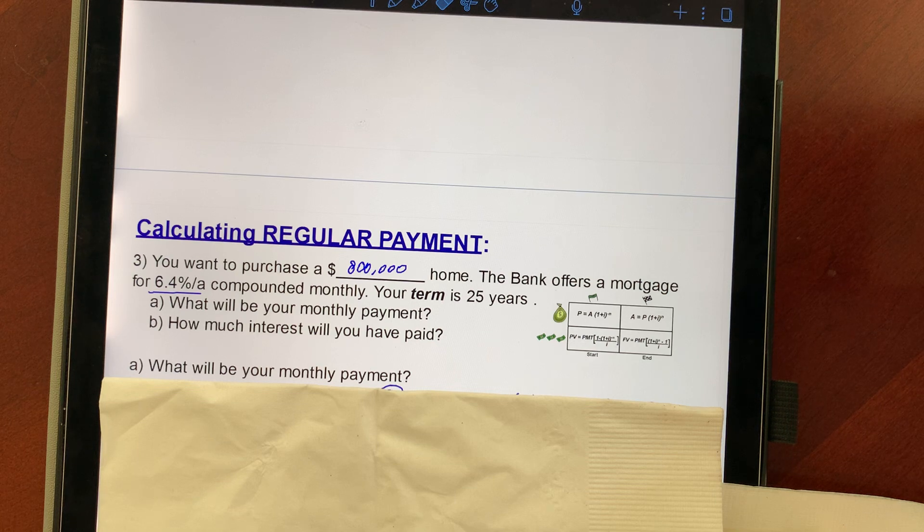So let's say you want to purchase an $800,000 home and the bank offers you a mortgage of 6.4% compounded monthly. Your term is 25 years. So let's talk about those numbers.